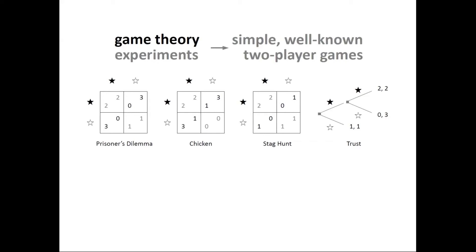In Prisoner's Dilemma, Chicken, and Stag Hunt, there are two players who make choices simultaneously. In these payoff matrices, one player chooses between options identified by rows and the other by columns, and the numbers in each cell are payoffs that the row player and column player would earn — converted into money.